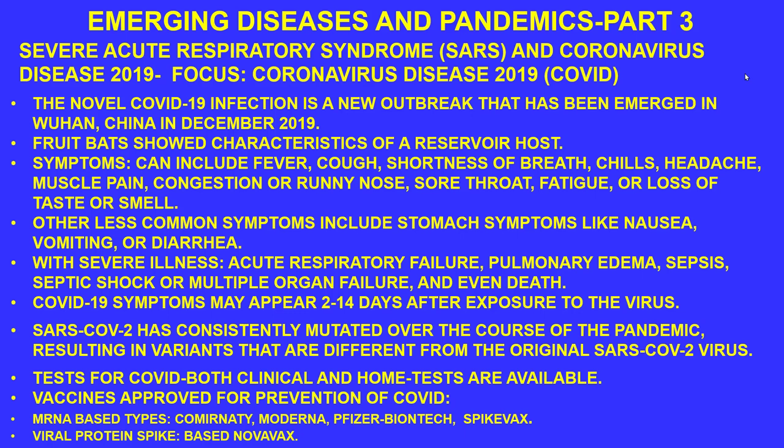Novavax made a protein subunit vaccine — a viral spike protein vaccine — that was accepted but sluggish in going through trials and getting documentation necessary for distribution.